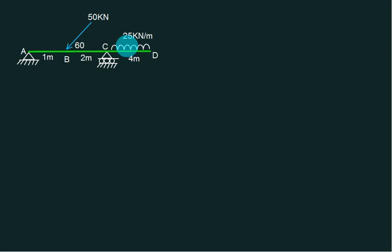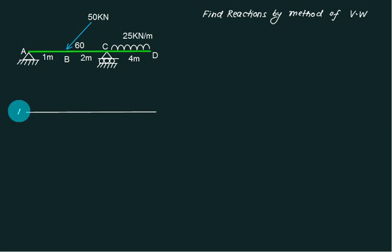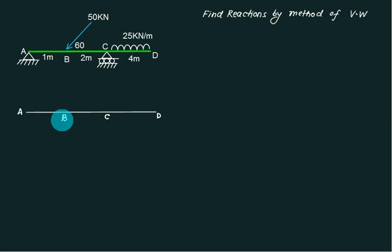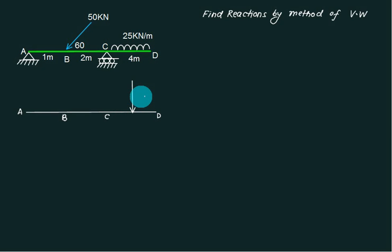The load is UDL and this one is a point load. Point A is on the left, then point D, point C, and point B. The UDL is replaced by one equivalent point load, which will act exactly between C and D, at L/2 from each end. This was done in the last Sunday class. 25 into 4 is 100.